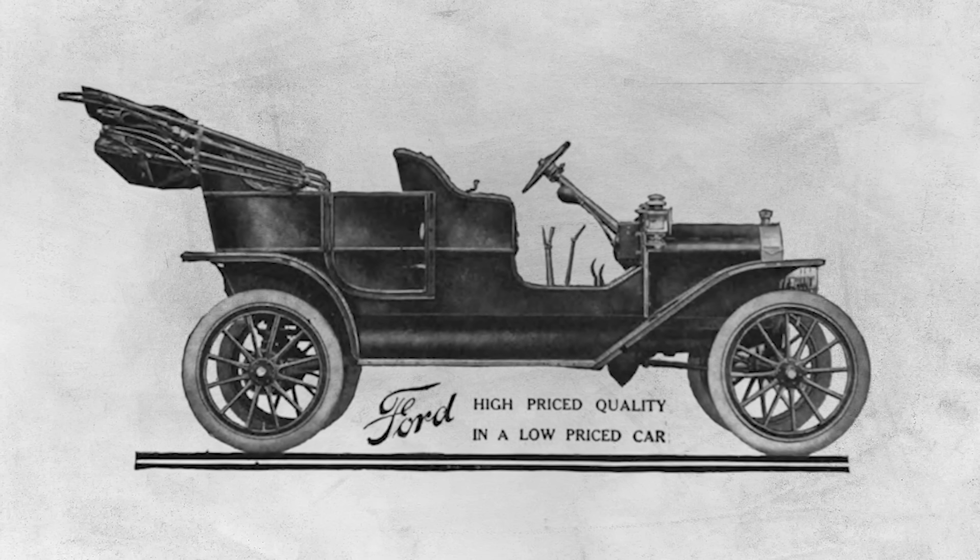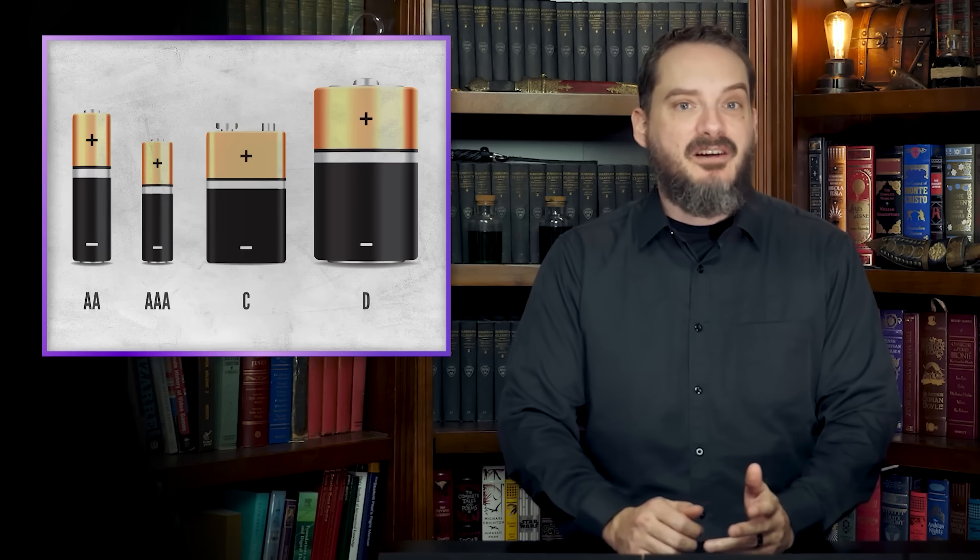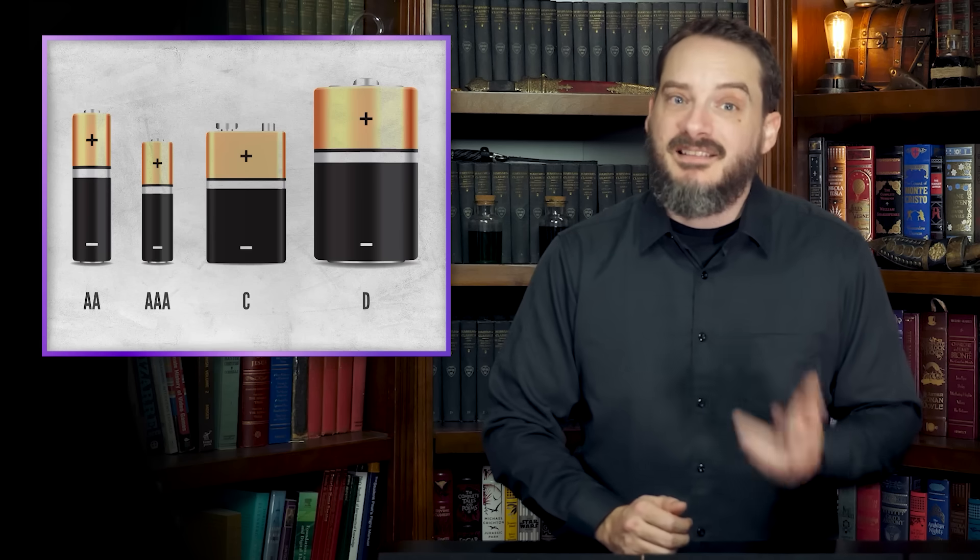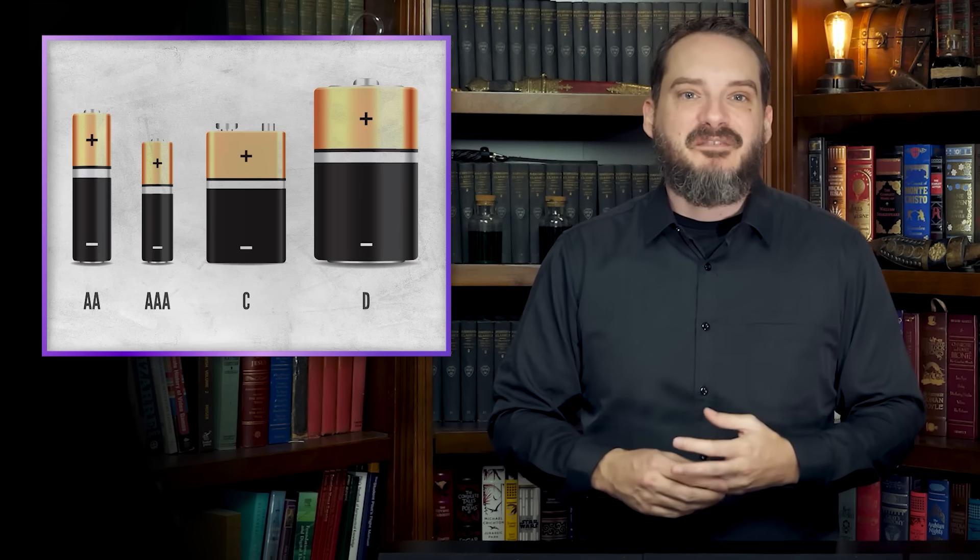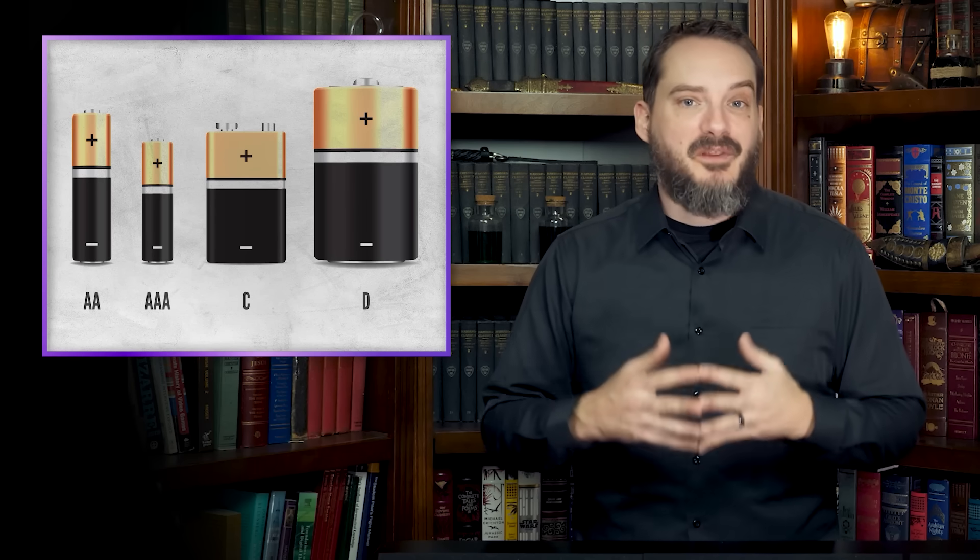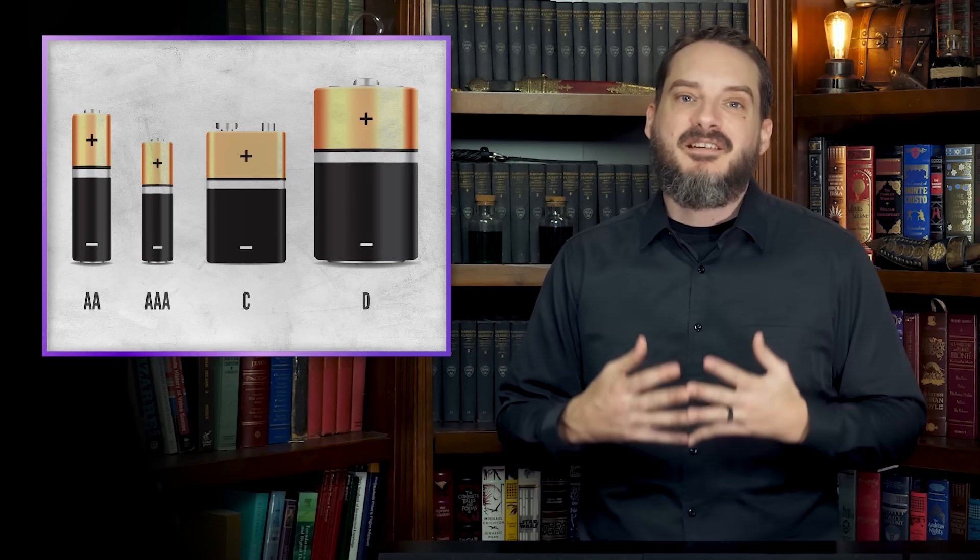In addition to still being one of the most common rechargeable batteries in use today, Waldemar Junger's nickel-cadmium design was also the world's first alkaline battery, using an alkaline potassium hydroxide electrolyte instead of an acid. However, the acidic zinc carbon cell would continue to dominate the portable flashlight battery market until the late 1950s, when Canadian engineer Louis Urie, working for Union Carbide in Cleveland, Ohio, combined the basic design of the zinc carbon battery with an alkaline manganese dioxide paste electrolyte. First marketed in 1959, this design would go on to form the basis for the most popular types of consumer batteries in use today.